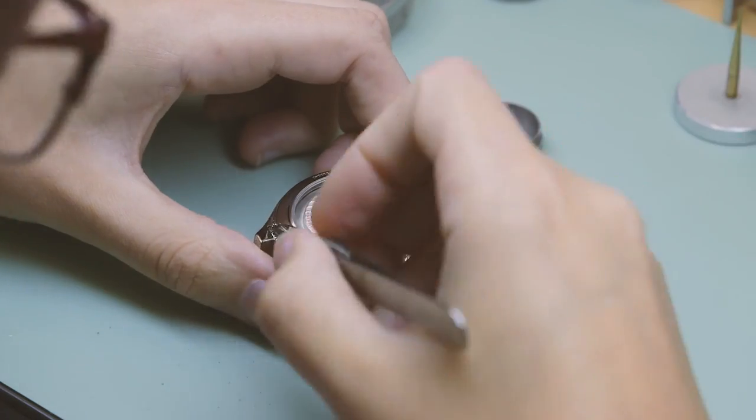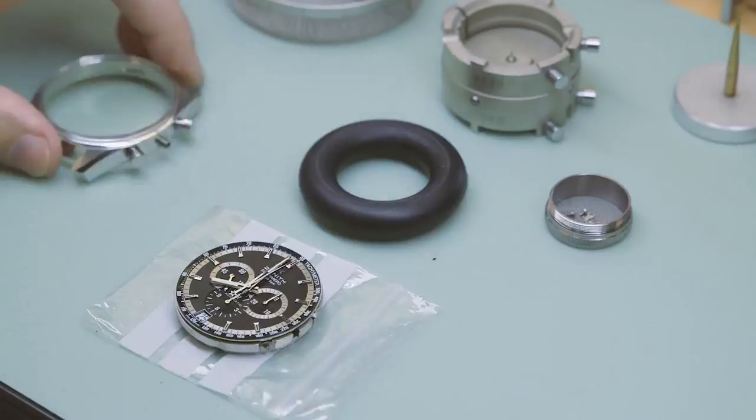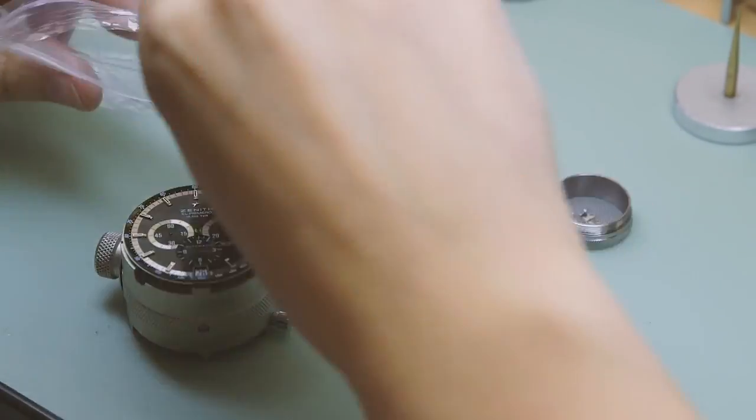To do this we call upon watchmaker Sarah Jane King from Watchfinder. Initially she removes the sapphire case back, the case screws, rotor, hands, dial and date ring.